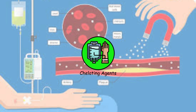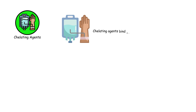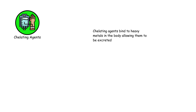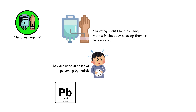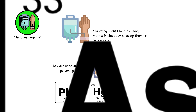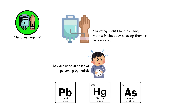Chelating agents bind to heavy metals in the body, allowing them to be excreted. They are used in cases of poisoning by metals like lead, mercury, and arsenic.